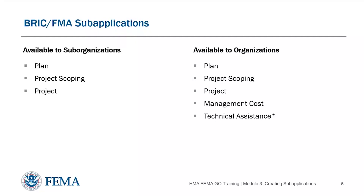Plan sub-applications are requests for funding for developing new or updating existing multi-hazard mitigation plans. Project scoping sub-applications are a request for funds to help develop the scope of a project. These types were previously called advanced assistance in the legacy mitigation e-grant system, and are sometimes necessary before a sub-application for a large or multi-jurisdictional project can be developed. Project sub-applications are for both construction and non-construction mitigation activities. Examples of non-construction projects include developing codes and regulations, public education and outreach initiatives, and natural resource protection strategies.